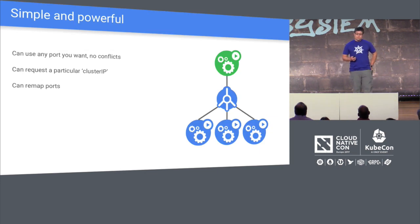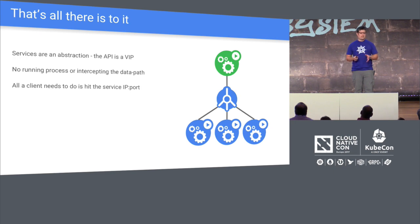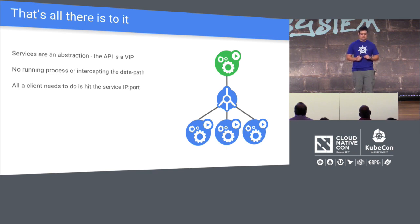Services are simple and powerful. You can use any port you want — you don't have to worry about conflicts and remapping ports. You can request a specific IP address if needed. The big thing to remember is a service is just an abstraction — it's not a daemon of running code. It's a way of setting it up so that all you need to do is hit that IP address and it magically and evenly balances traffic across all of your pods.